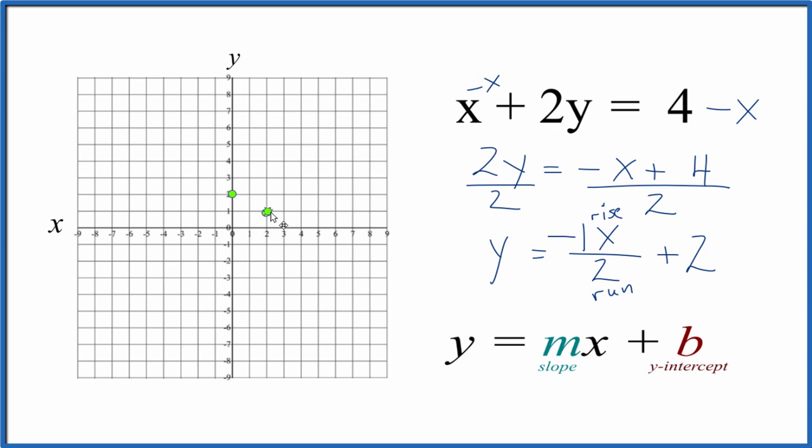Let's do another point. We rise negative 1, so we go down, and we run - we move to the right 1, 2.